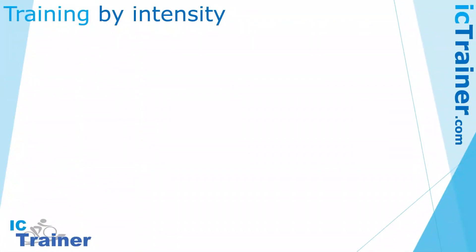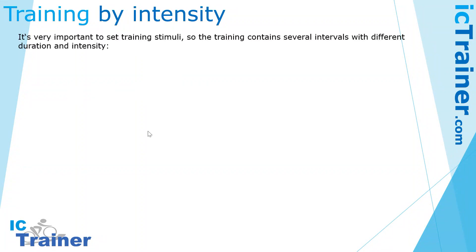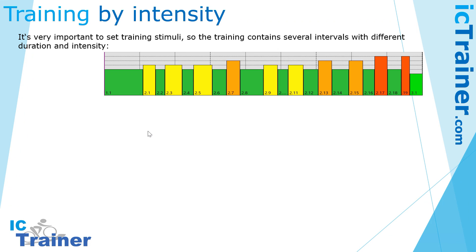Let's step a little bit deeper into the issue of training by intensity. In good training, you set training stimuli — you train normally with several intervals with different durations and intensities. For example, the green levels are the recovery levels, and then you have yellow, orange, and red: the levels with higher intensity.